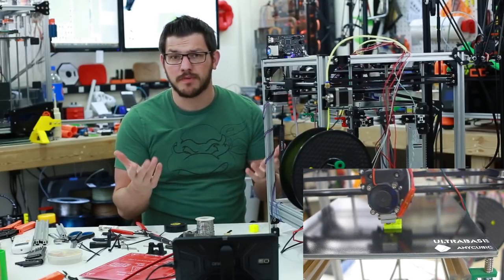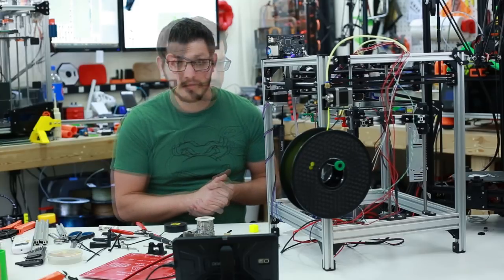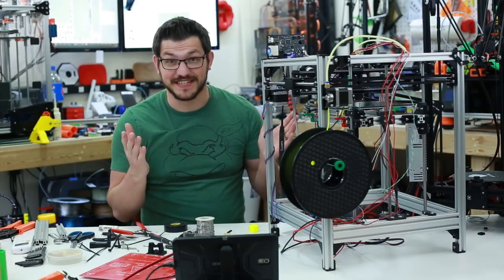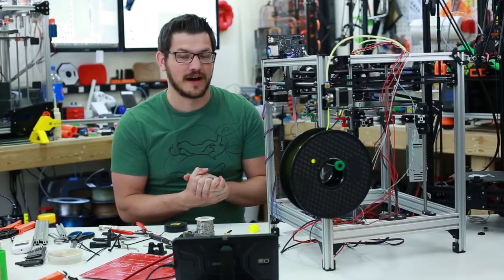This is printing at 205 and 60 with the ultra base. When the ultra base cools down, prints pop right off, which is why I chose it for this printer. I really like it. So, as you can see, it's finally printing. It's great. I'm super happy about this and we're going to call it good on part five.